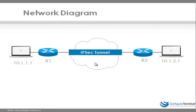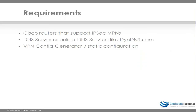The requirements for this are: firstly you require two Cisco routers that support IPsec VPNs, so you've got to have the right routers with the right IOS. You need a DNS server or an online DNS server like dyndns.com which the routers can dynamically update with their new IP addresses, and lastly you need the VPN config generator or you can configure the VPN manually. In this demonstration I'm going to use the VPN config generator.